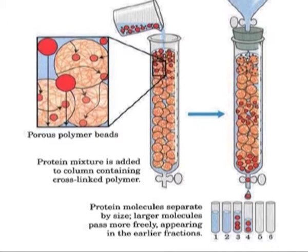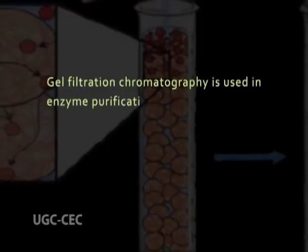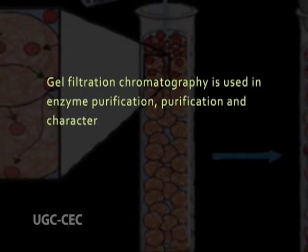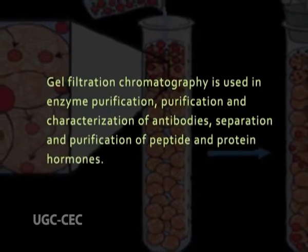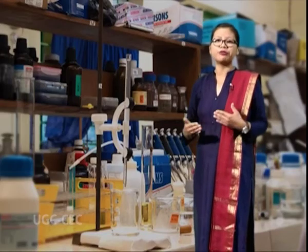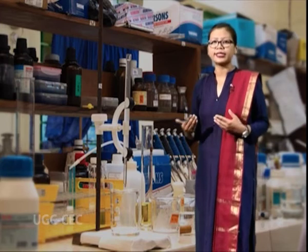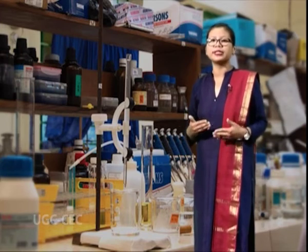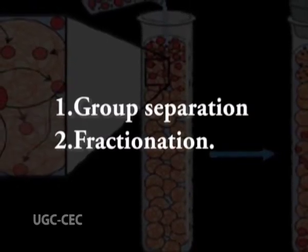Small size proteins enter the beads and get eluted last out of the column. Gel filtration chromatography is used in enzyme purification, purification and characterization of antibodies, separation and purification of peptide and protein hormones. Gel filtration chromatography can be applied to separate a wide range of molecules according to size including proteins and enzymes, polysaccharides and nucleic acids. There are two major categories of gel filtration chromatography: group separation and fractionation.